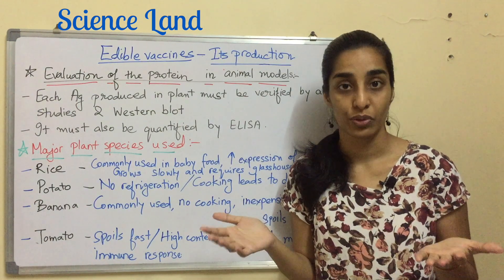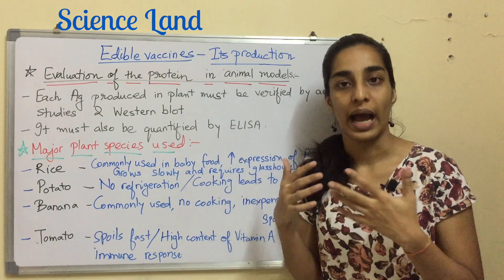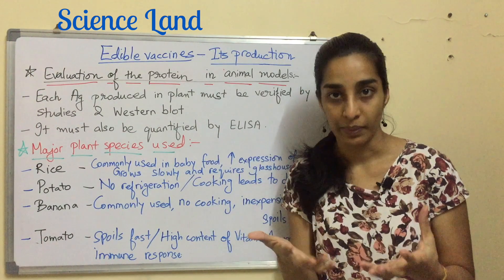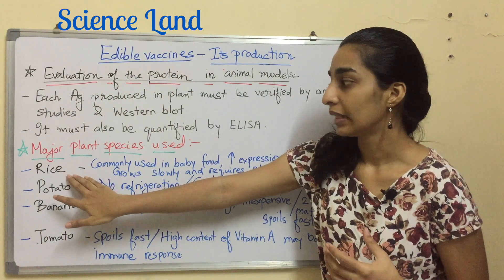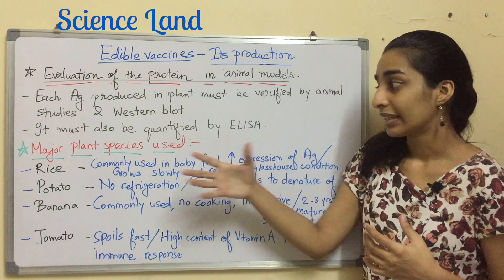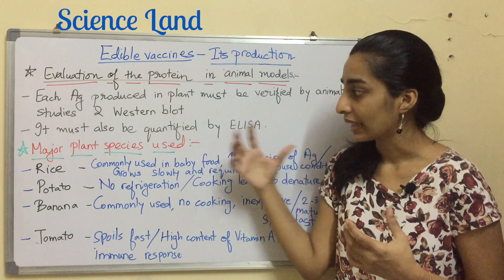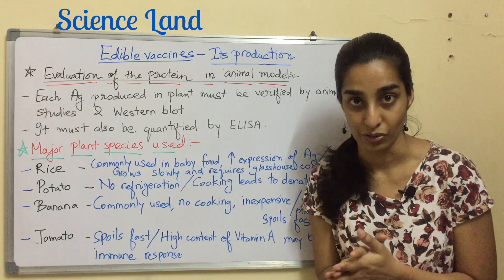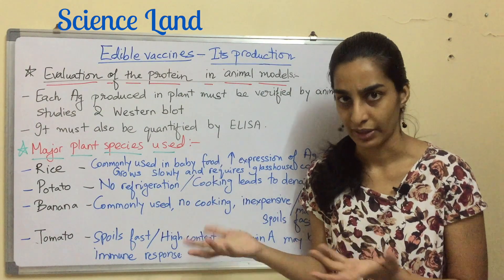Now let's talk about the major plant species used to make edible vaccines. Rice is commonly used in baby food and shows high antigen expression, but it grows slowly and requires glasshouse conditions. Potato requires no refrigeration for storage, but cooking it leads to denaturation of the antigen.